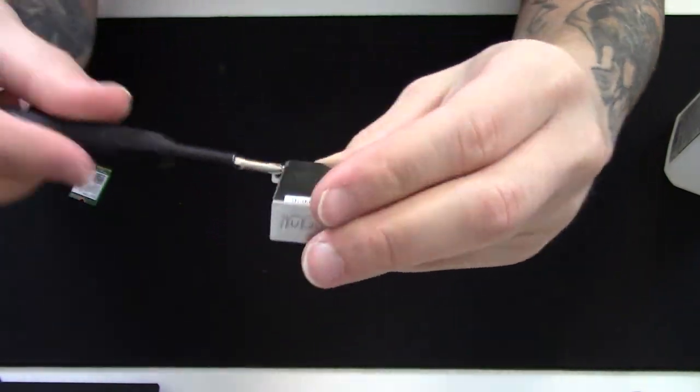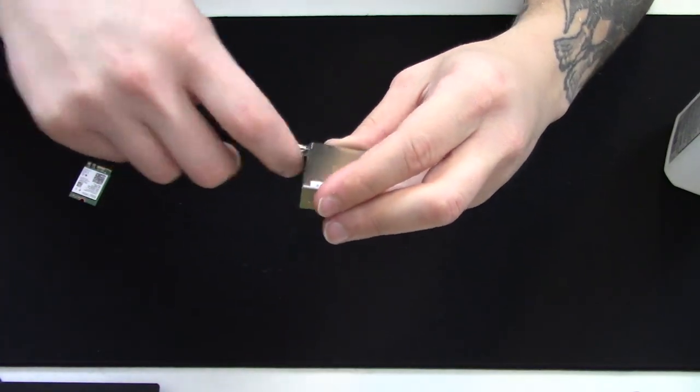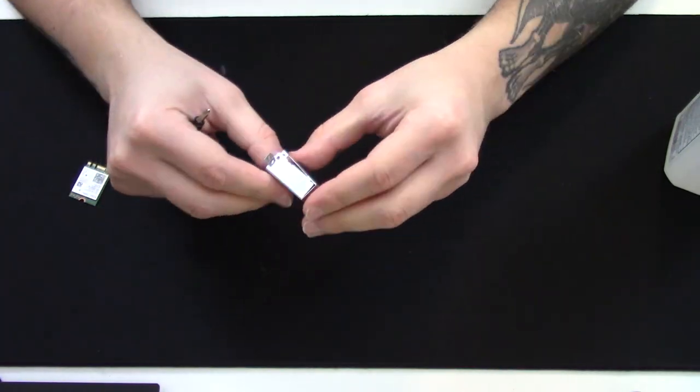Remove the screw in the front bottom of the adapter's housing, and peel back the sticker to remove the top cover.